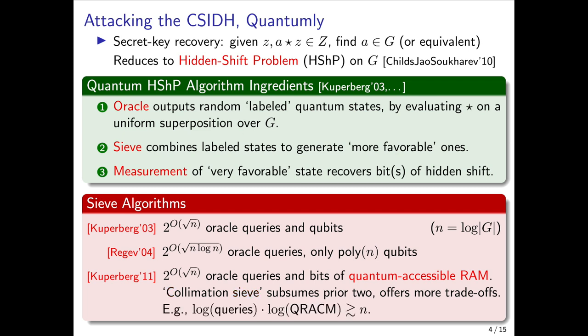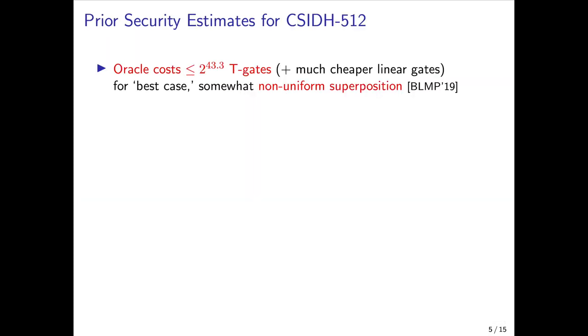He also in this work gave a different kind of sieving algorithm which he called the collimation sieve, which actually subsumes the sieve algorithms from the prior two works and offers a variety of other trade-offs that were not available before. For example, if one makes the log of the number of oracle queries times the log of the amount of quantumly accessible RAM larger than about n, then the sieve can be successful.